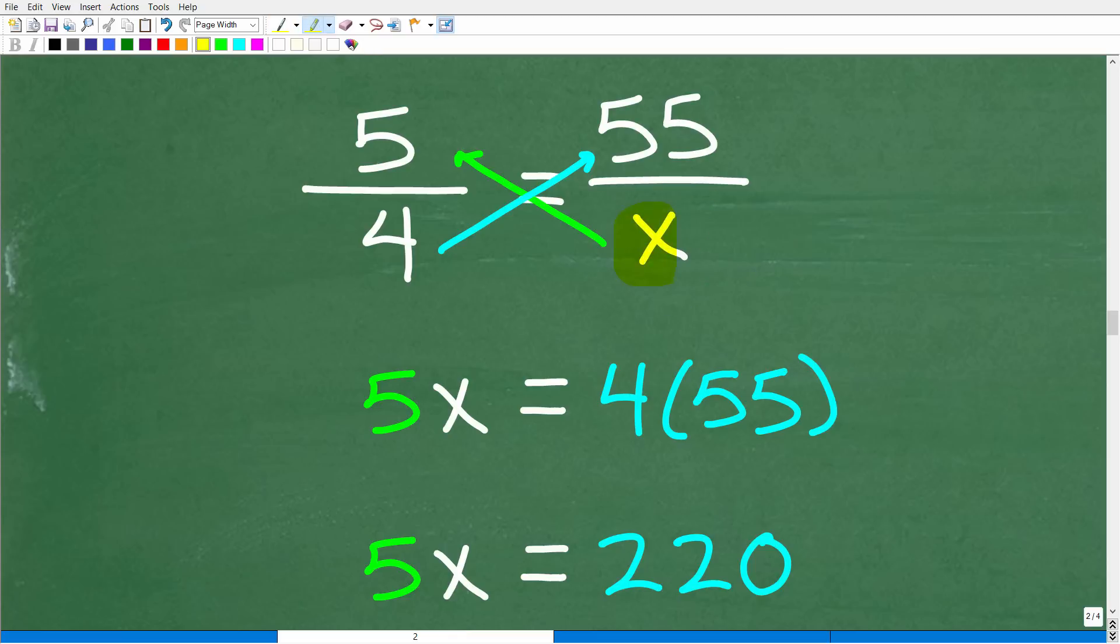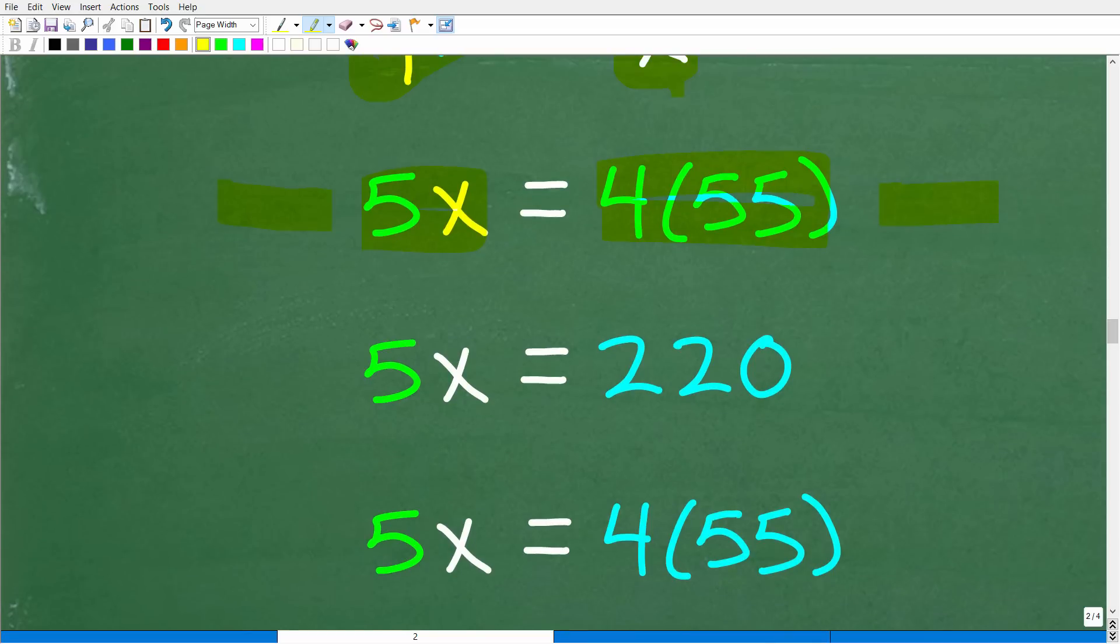So it's going to be X times five is 5X, and then four times 55. I'll write this like this, okay? I'm going to make another point here in a second. So just make sure we understand the cross product, right? Five times X is 5X. Four times 55 will be four times 55. Now, instead of getting my calculator out or just doing this on a piece of paper, some of you might rush and be like, okay, four times 55, I'm going to do that. That's 220.